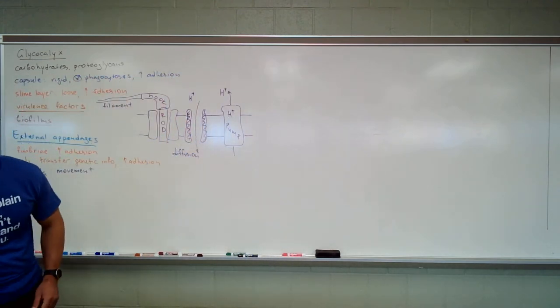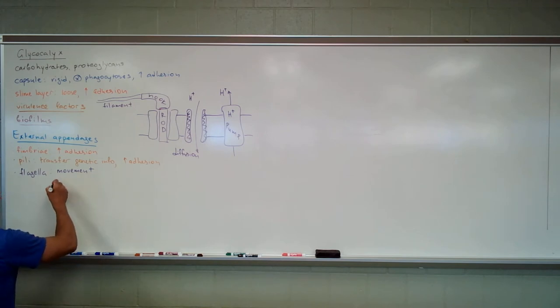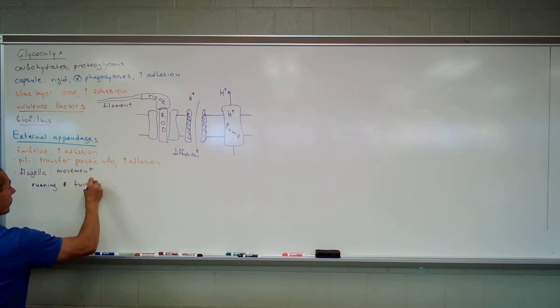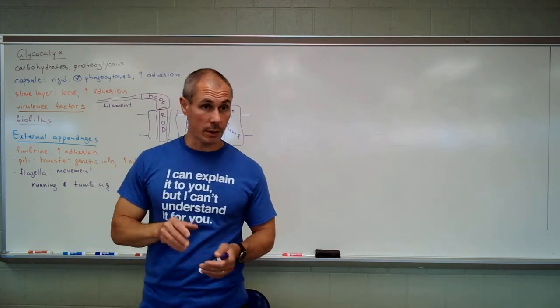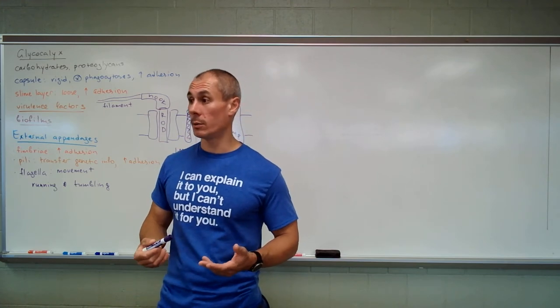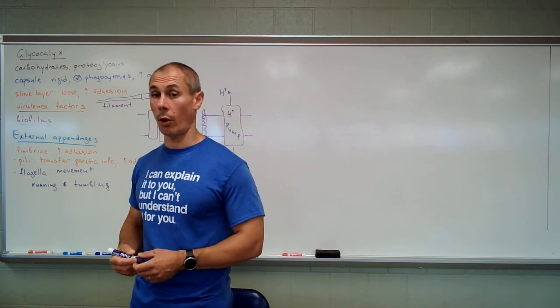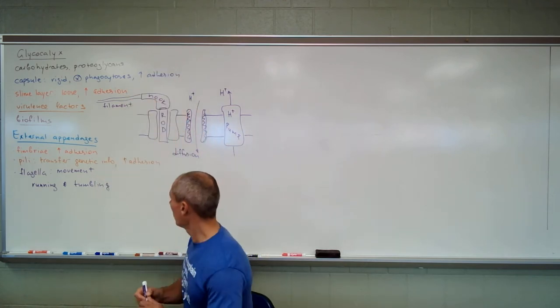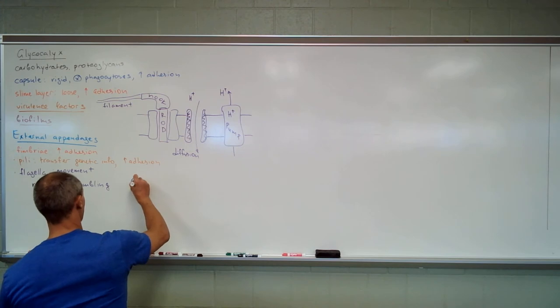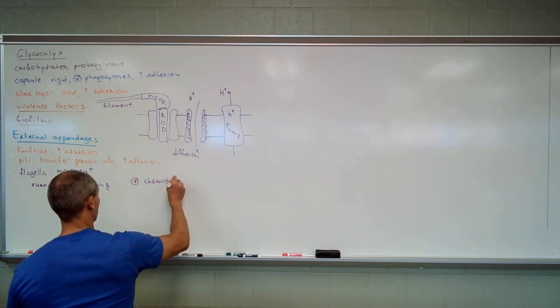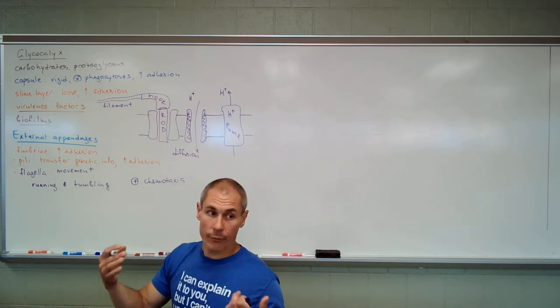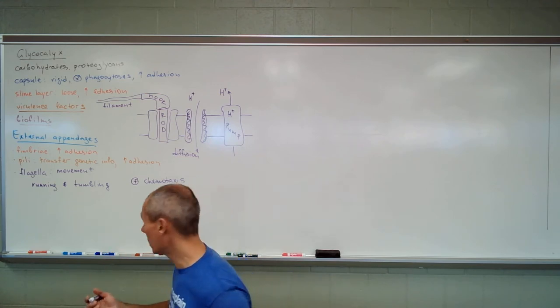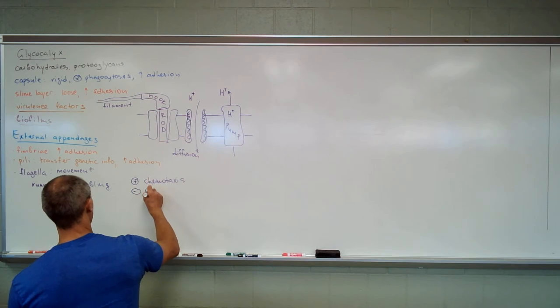A couple more things about flagellar movement. Flagella propels cells in two ways: running and tumbling. Running is a steady movement of bacterial cells. The question is, where do bacterial cells move? The answer is very simple. Bacterial cells move to some goal. If this goal is nutrients, we call this positive chemotaxis. Chemo refers to nutrients, taxis refers to movement. If the goal is to get away from a bad chemical, then running away will be negative chemotaxis.